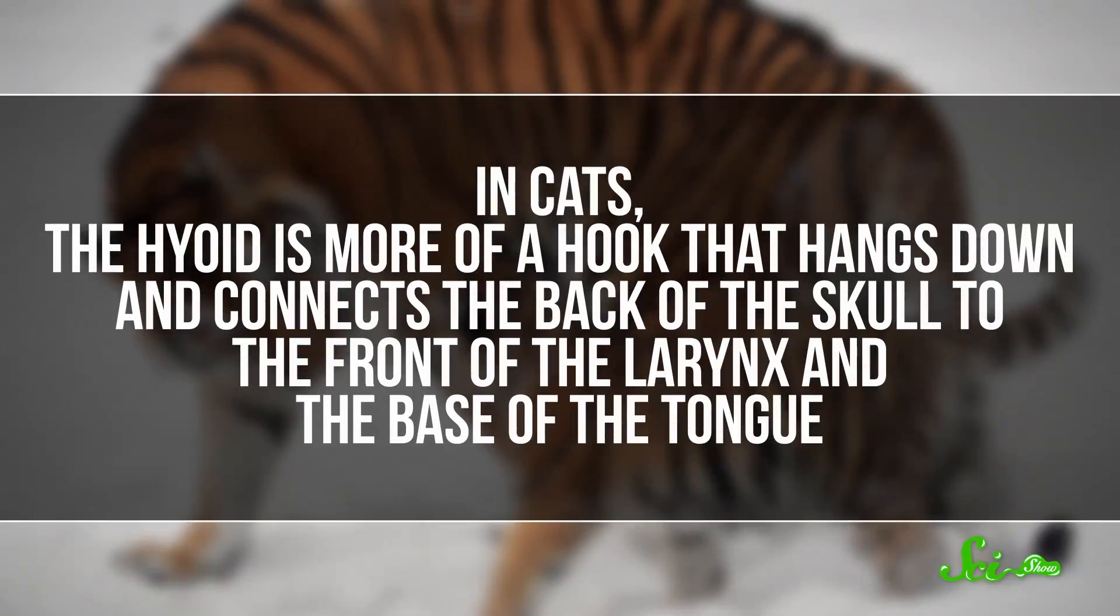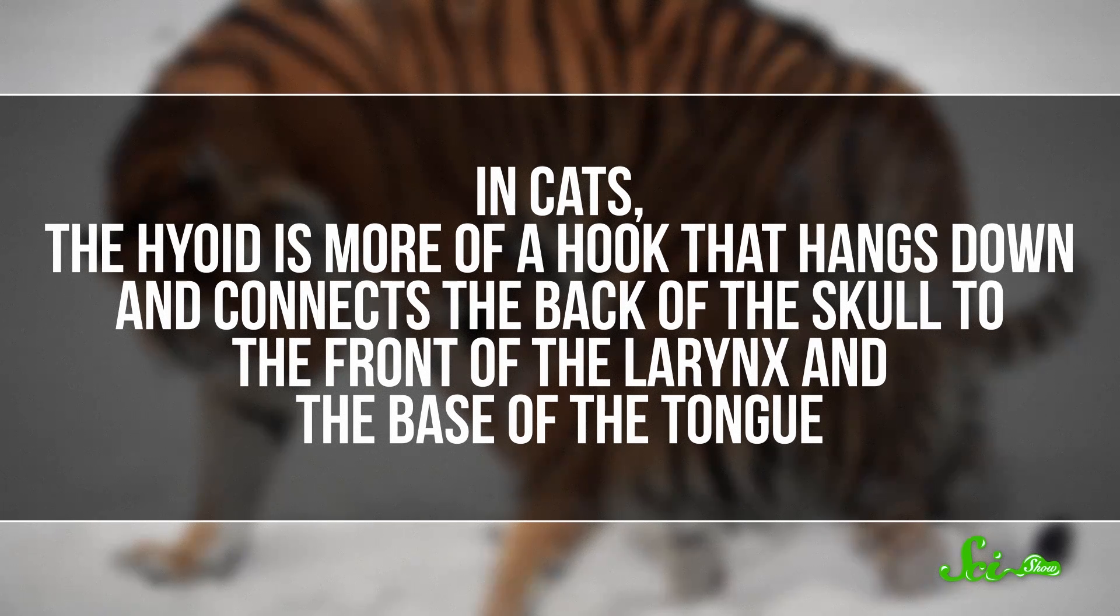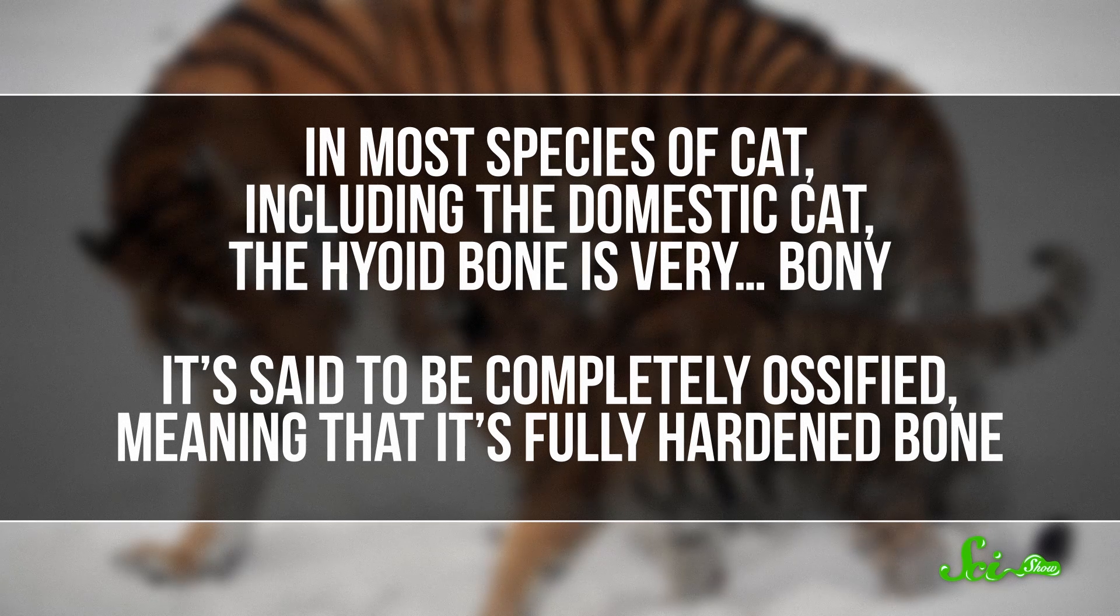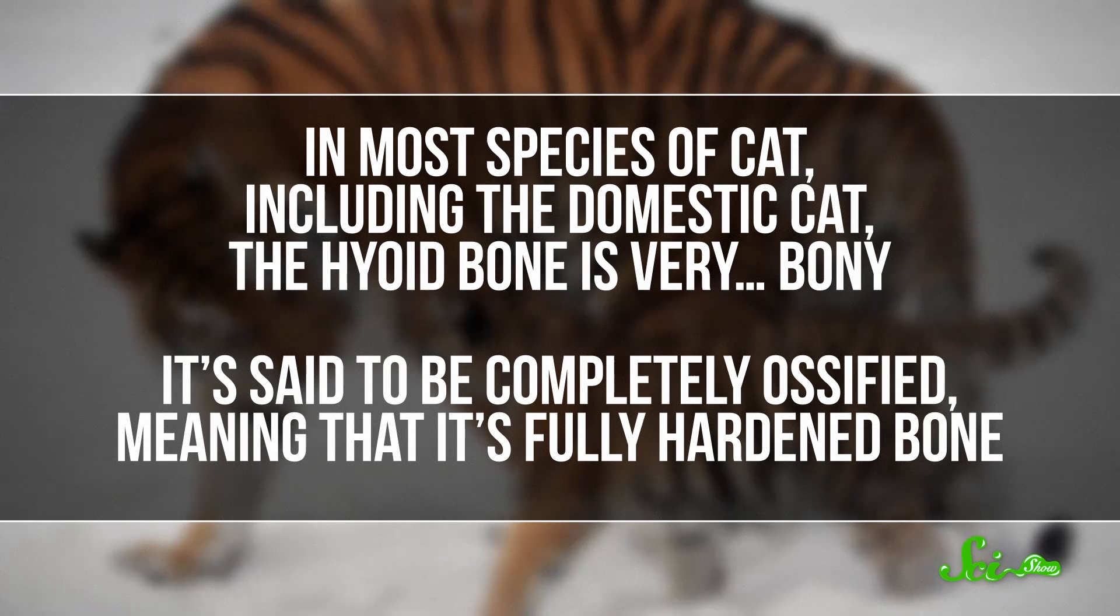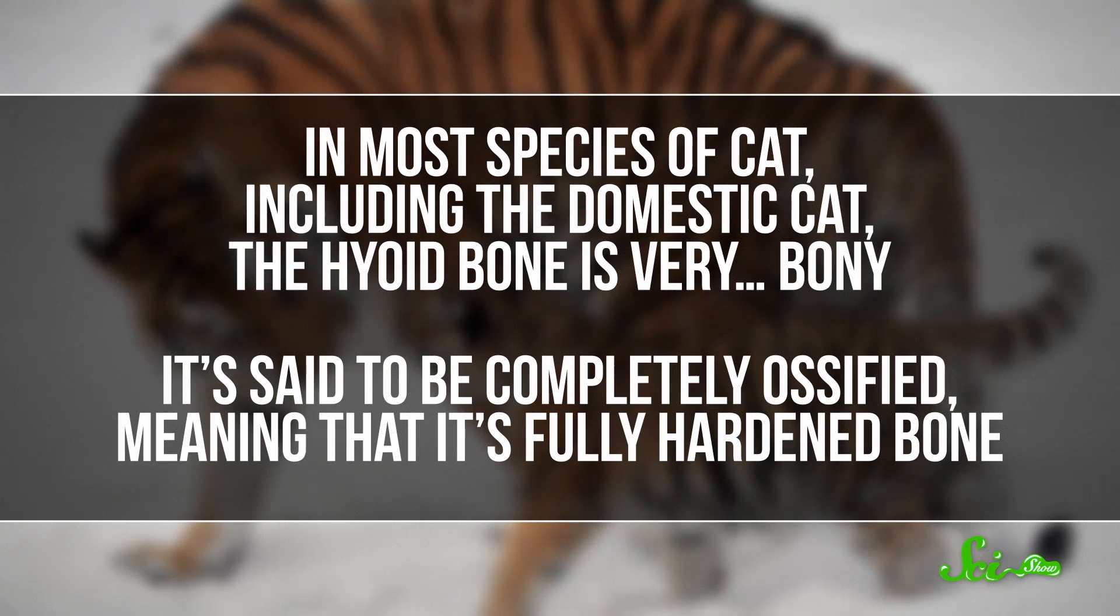In cats, the hyoid is more of a hook that hangs down and connects the back of the skull to the front of the larynx and the base of the tongue. In most species of cat, including the domestic cat, the hyoid bone is very bony. It's said to be completely ossified, meaning that it's fully hardened bone. And all the cats that have a completely ossified hyoid can purr, but don't roar.